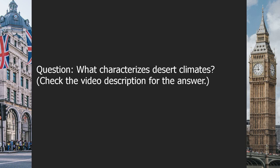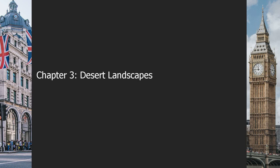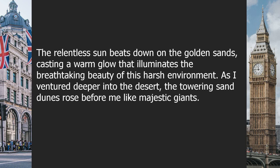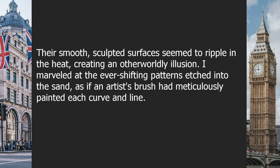Chapter 3: Desert landscapes. Desert landscapes are vast, stretching as far as the eye can see. The arid terrain is dominated by sand dunes and deep canyons carved over centuries by the forces of wind and water. The relentless sun beats down on the golden sands, casting a warm glow that illuminates the breathtaking beauty of this harsh environment. Venturing deeper into the desert, towering sand dunes rose like majestic giants.